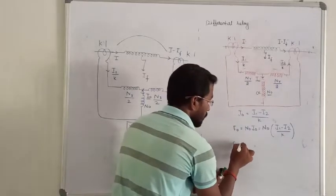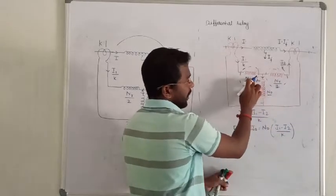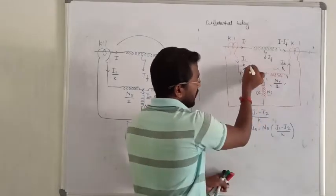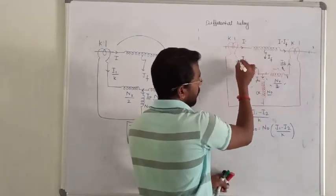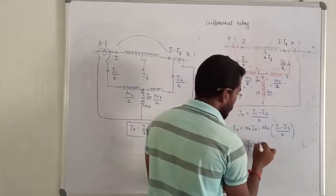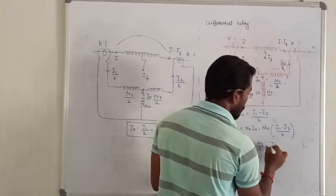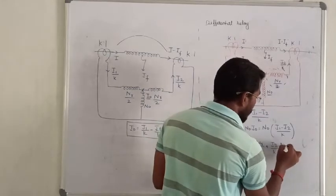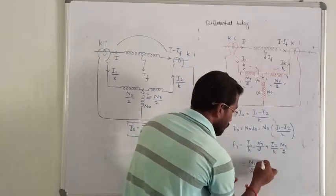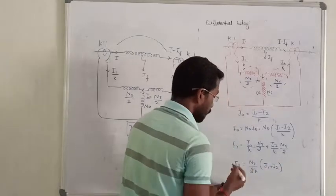Next term: restraining force. In the coil it is a spring — this is the developed power, total force, restraining coil. First, in the coil the force developed is: I1 by K into number of turns NR by 2, plus I2 by K into NR by 2. If you have two terms: NR by 2K, bracket: 2I1 plus I2. So that is our restraining force.